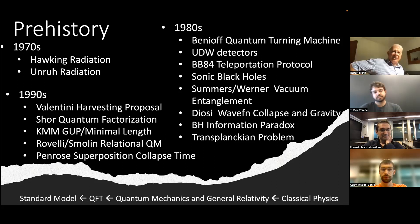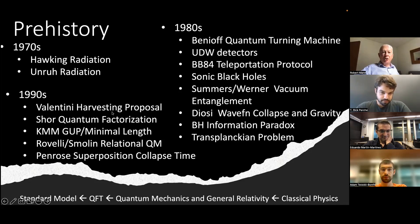In the 90s, Anthony Valentini proposed that vacuum entanglement could be harvested by atoms in a cavity. Peter Shor showed quantum physics could factorize large numbers much more efficiently. The notion of generalized uncertainty and minimal length came in a paper by Kempf, Mangiano and Mann in 95. Ravelli and Smolin proposed quantum mechanics should be understood in relational terms. Penrose estimated how fast gravity could collapse a superposed wave function.